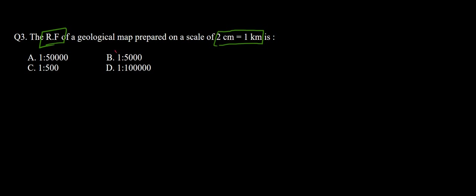Question 3 says: the RF of a geological map prepared on a scale of 2 centimeters equal to 1 kilometer is what? We have been given that 2 centimeters on the map represents 1 kilometer on the actual ground, and we need to find the representative fraction ratio.